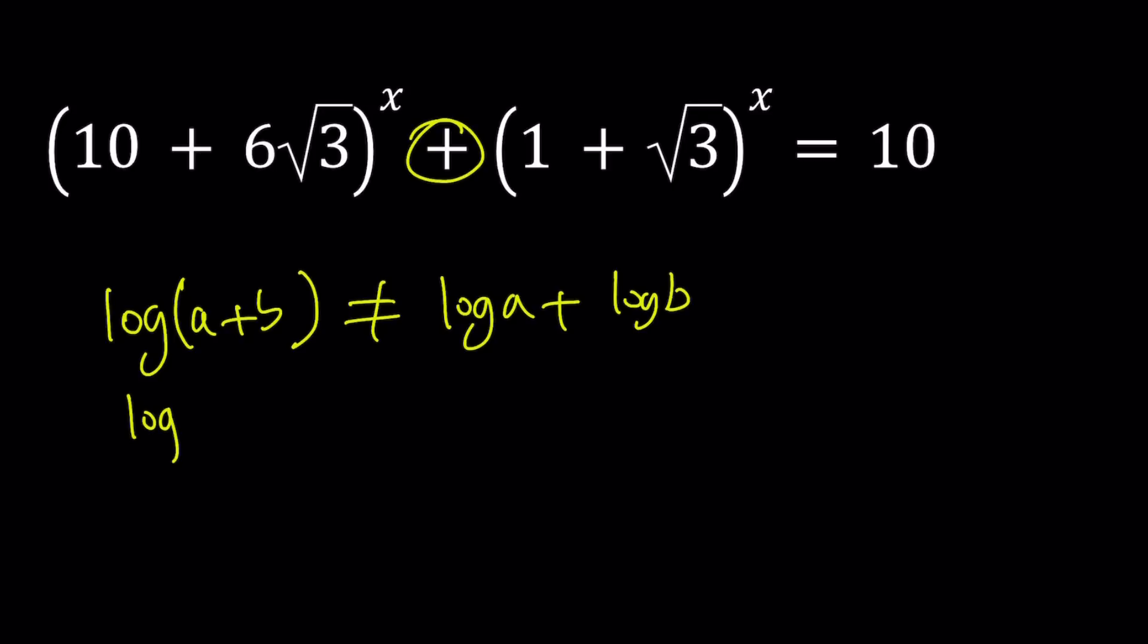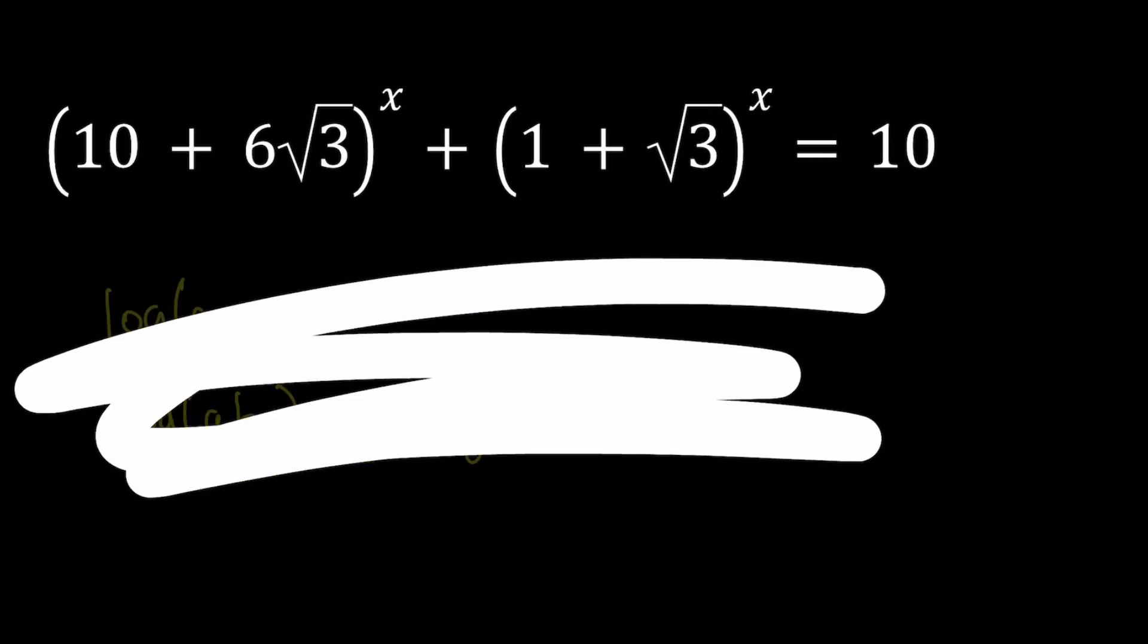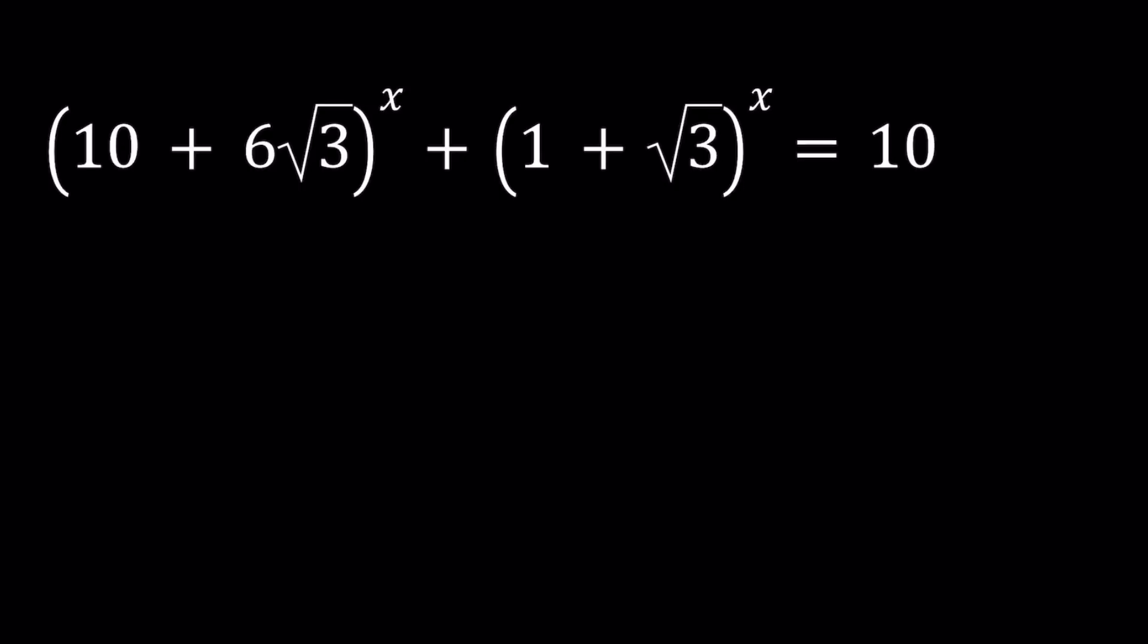So logging is not going to help. If you had a product or a quotient this would be helpful. So something that doesn't work, something that works. We should do something else. Instead of trying to log both sides and guessing, which would be really hard because we have two radical bases, here's what we can do. We can actually find the relationship between the bases. If I can do that then I will proceed with substitution.